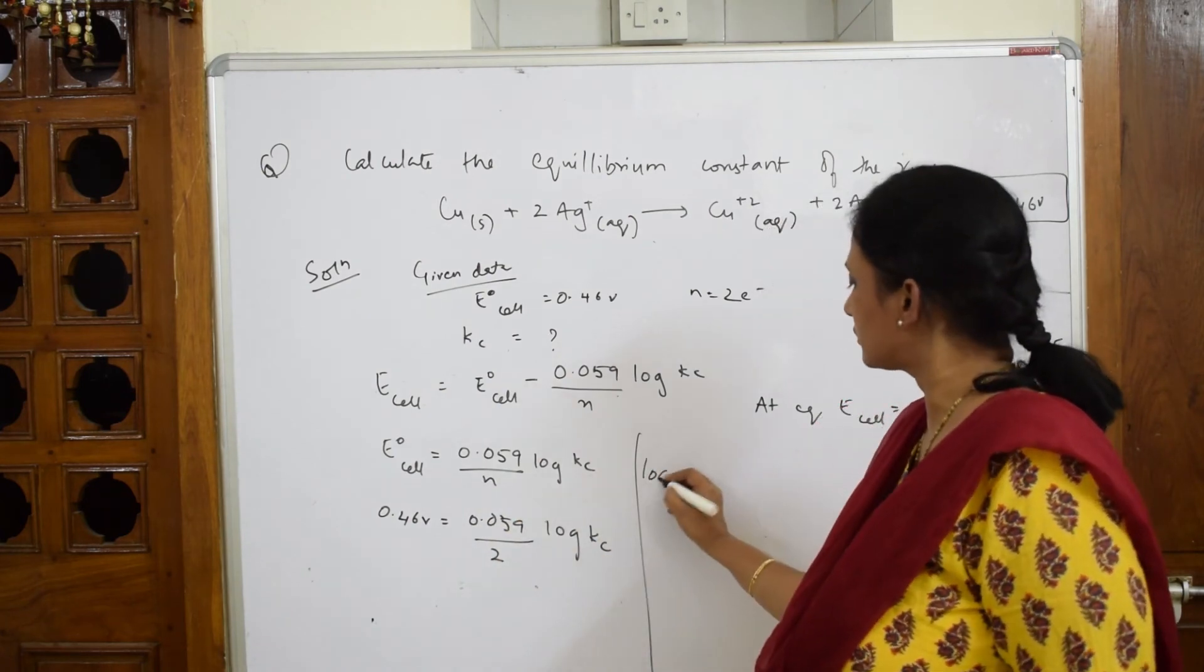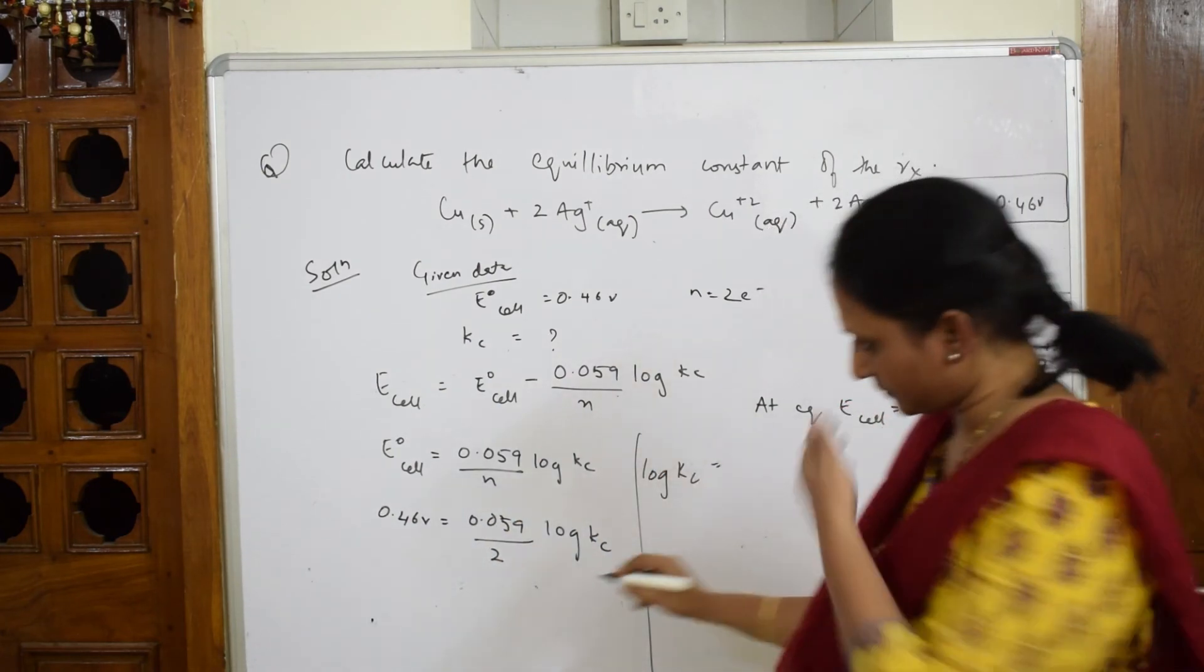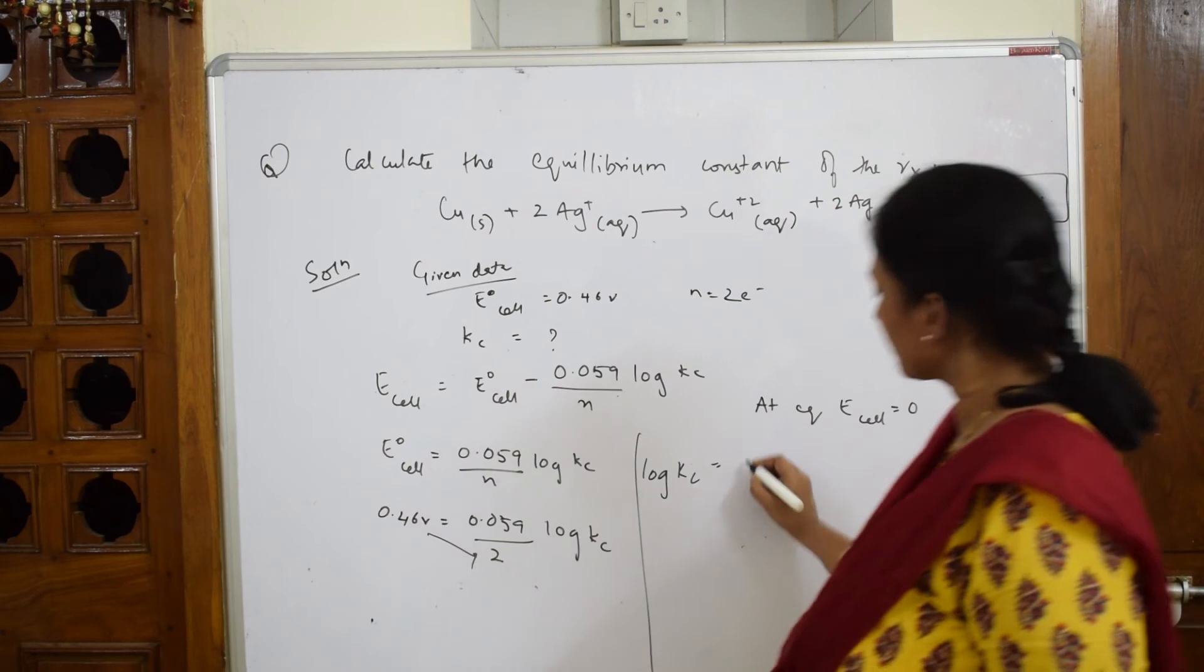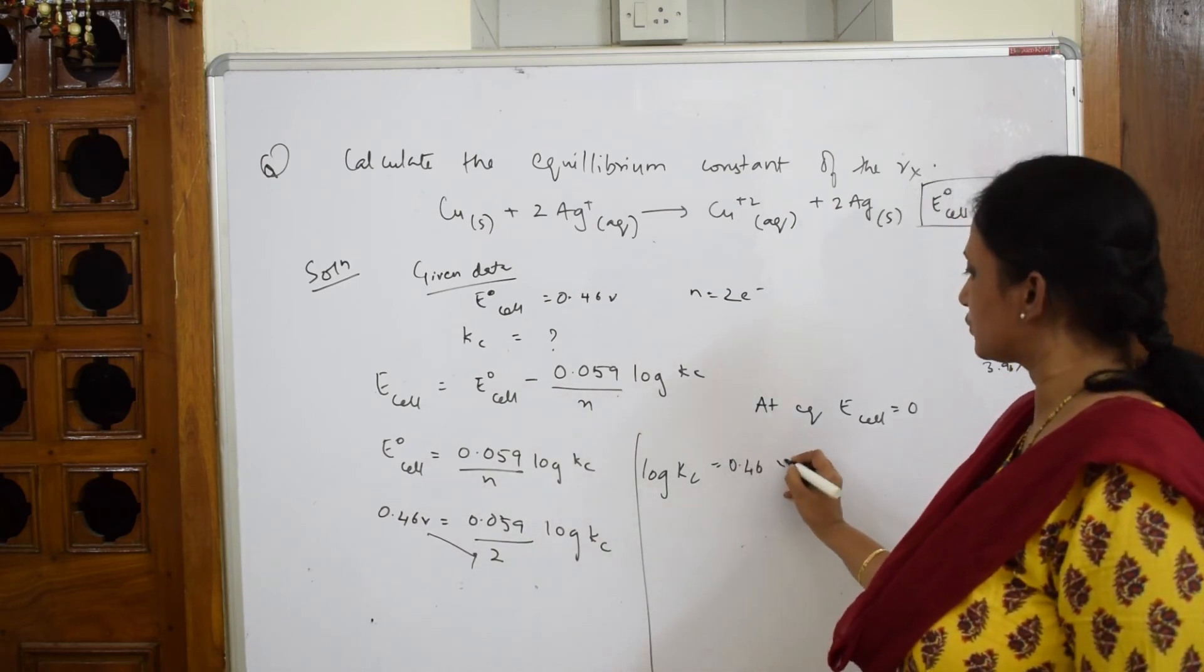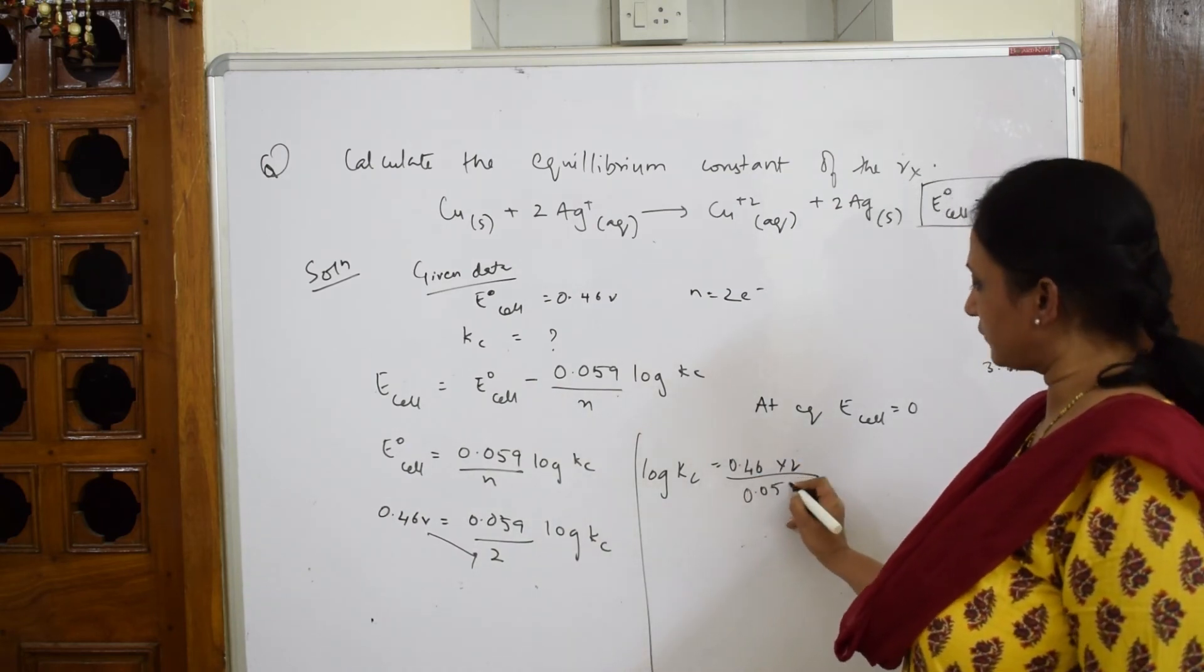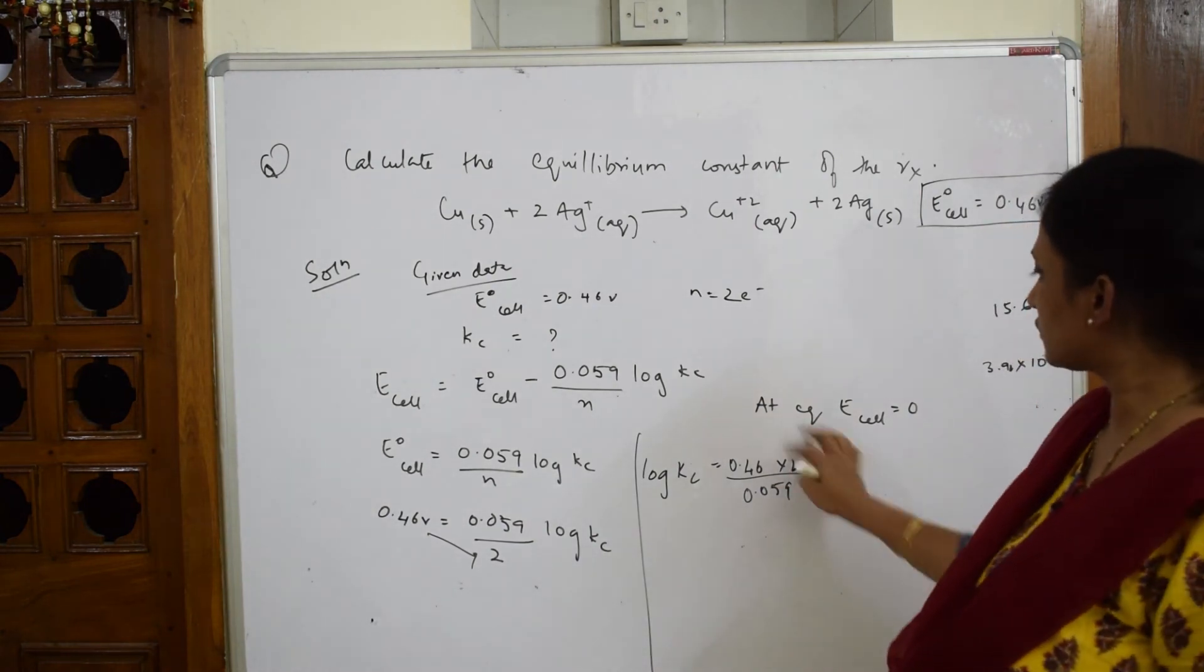Now I'm getting log Kc out. Log Kc is equal to, cross multiply, 0.46 into 2 divided by 0.059. When I solve this, log Kc value directly I get 15.6.